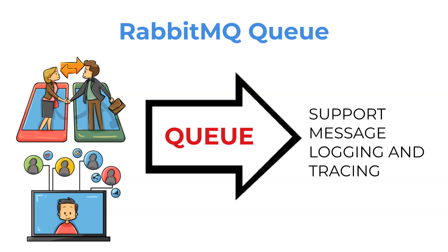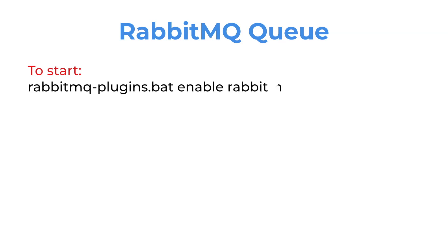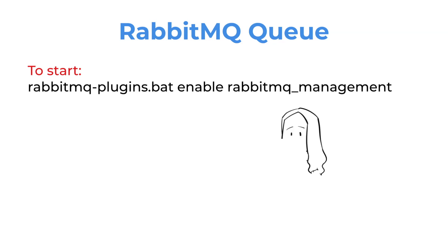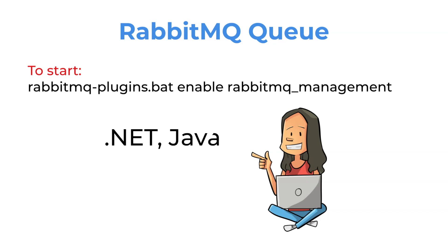Here are some examples of commands. To use RabbitMQ, you need to check your programming language's client that connects to RabbitMQ. RabbitMQ supports many languages such as .NET, Java, PHP, Python, and more.